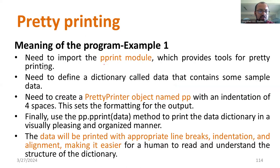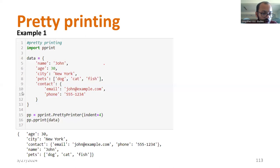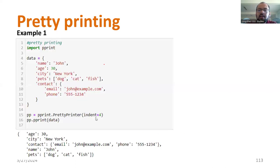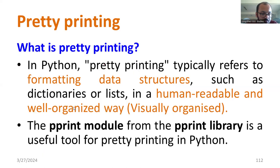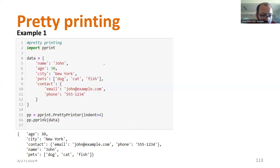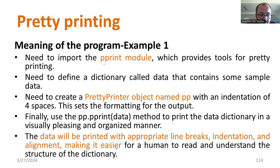I request you to try the same thing in your convenient interpreter so that you can verify the output. First of all, we require the pprint module initially. Later, we need to define the dictionary called data from line number 4 to line number 11. Next, you need to create a PrettyPrinter object named pp with the indentation of four spaces. That four means indentation, showing four spacing. That is your option for spacing. Finally, use pp.pprint data method to print the data dictionary in a visually pleasing and organized manner.